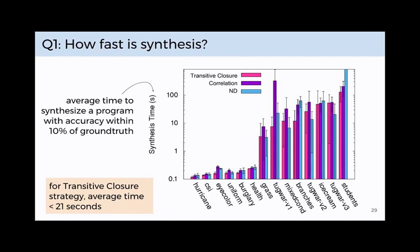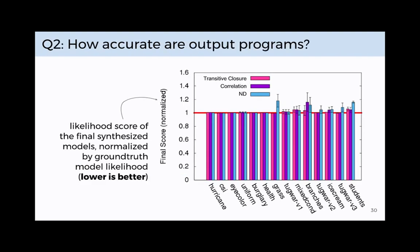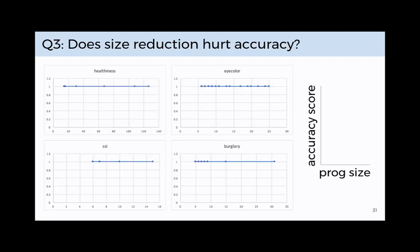The question how fast is synthesis? So for the transitive closure approach the one that we liked best that worked best it turns out is actually on average less than 21 seconds so we're very satisfied with that. We also wanted to know how accurate are the output programs and the way we evaluated that is we actually looked at the likelihood of the original ground truth programs and we compared that to the likelihood of the output programs from synthesis. And it turns out that we're basically at that normalization line so we're very happy there. We also wanted to know does the size reduction actually hurt accuracy? Are we shooting ourselves in the foot when we're eliminating these connections that we thought were unimportant? Is that algorithm actually performing well in that it's reducing size without actually sacrificing accuracy? And it turns out yes we're getting pretty solid size reductions but we're not actually seeing the accuracy fall too much.